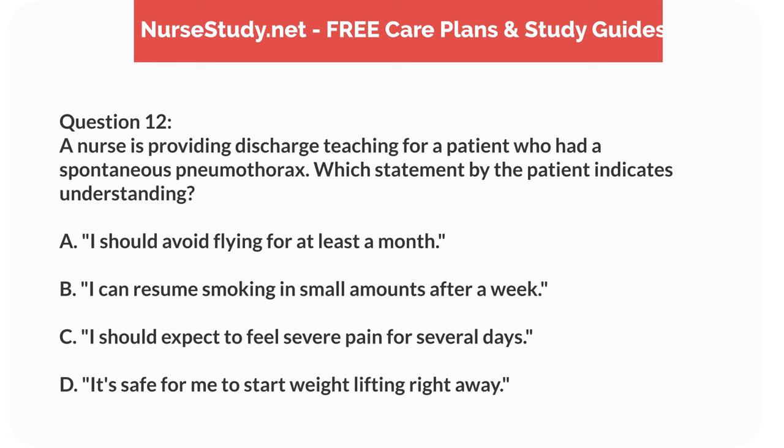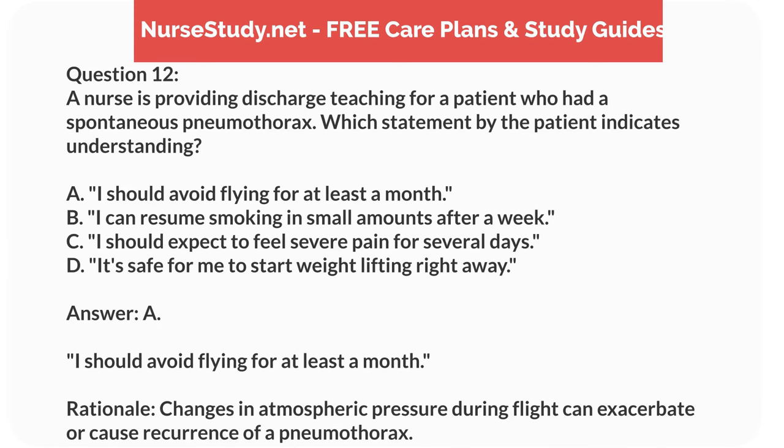Question 12. A nurse is providing discharge teaching for a patient who had a spontaneous pneumothorax. Which statement by the patient indicates understanding? A. I should avoid flying for at least a month. B. I can resume smoking in small amounts after a week. C. I should expect to feel severe pain for several days. D. It's safe for me to start weightlifting right away. Answer: A. I should avoid flying for at least a month. Rationale: Changes in atmospheric pressure during flight can exacerbate or cause recurrence of a pneumothorax.